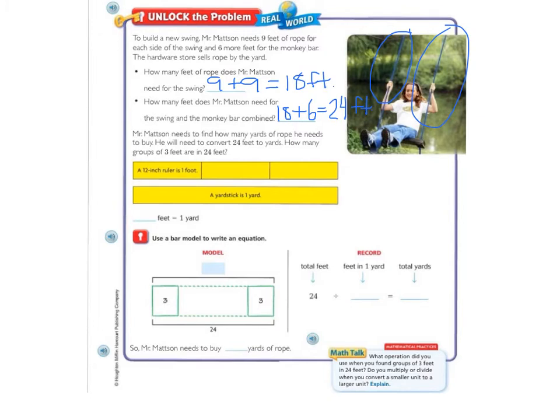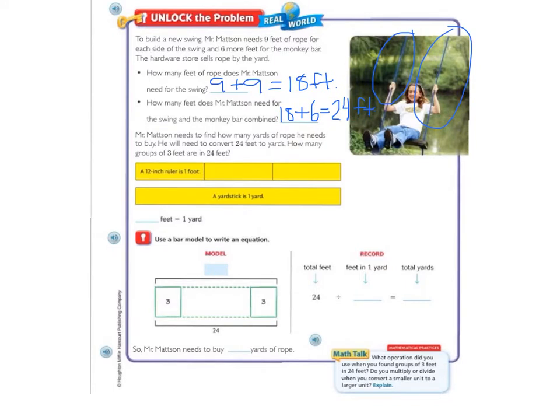Now we know that Mr. Mattson needs 24 feet of rope. But the hardware store only sells rope by the yard. So we need to find out how many yards are in 24 feet. And we will do this by finding how many groups of 3 feet are in 24 feet. So if we look at our diagram that we have here, the yellow boxes, we have 1 foot, 2 feet, and 3 feet for every 1 yard. So I'm going to write a 3 down here. 3 feet equals 1 yard.